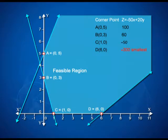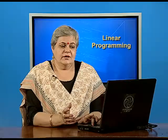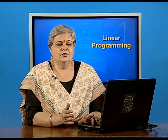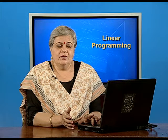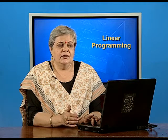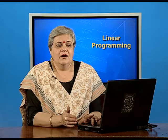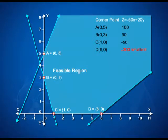Using the corner point method, we evaluate z = −50x + 20y at each corner point. At A(0, 5), z = 100. At B(0, 3), z = 60. At C(1, 0), z = −50. At D(6, 0), z = −300. We want to minimize z, and it appears that −300 is the smallest value. But since this is an unbounded region, we must perform one more test — we need to define and plot the half plane representing −50x + 20y < −300.